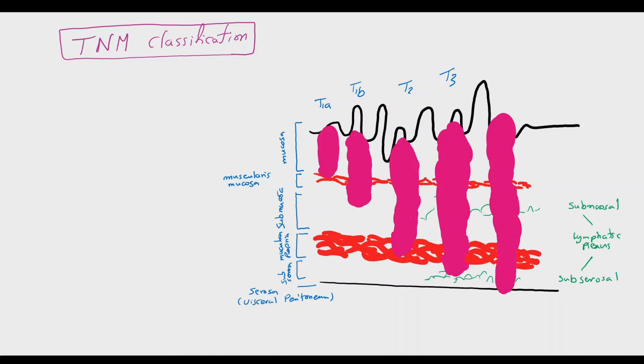T4 tumor penetrates the subserosa, but T4A without penetration of adjacent organs, and T4B with penetration or infiltration of adjacent organs like spleen.